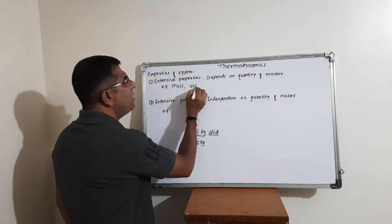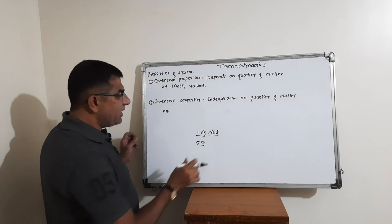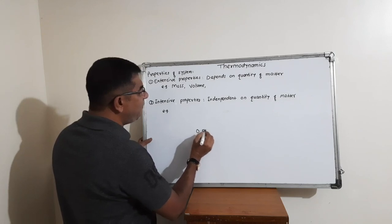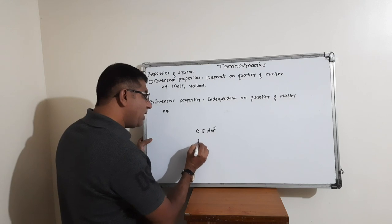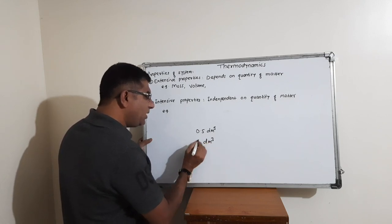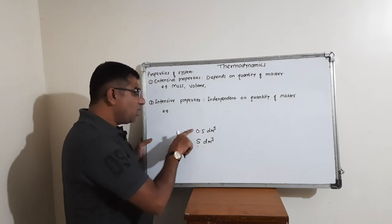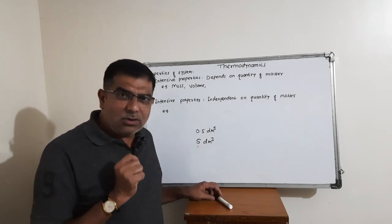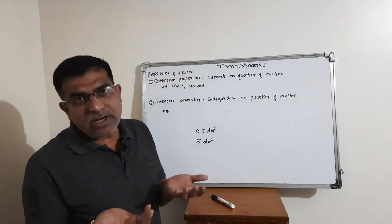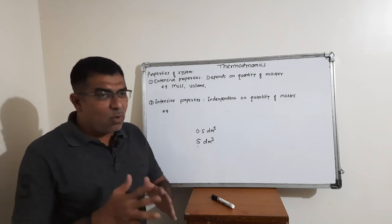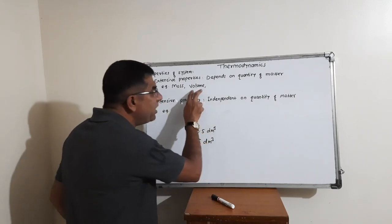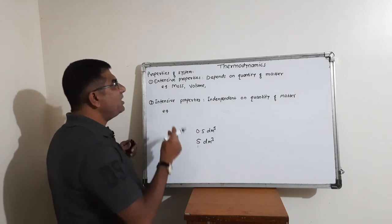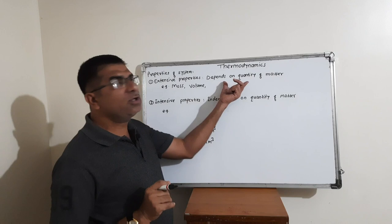For example, volume is an extensive property. If you take 0.5 dm³ of any liquid and then take 5 dm³ of that liquid, the volume will increase as the quantity is added. When the quantity changes, the volume changes. That means volume is a property which depends on quantity of matter — it is an extensive property.